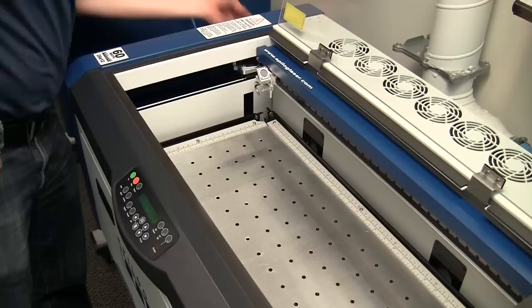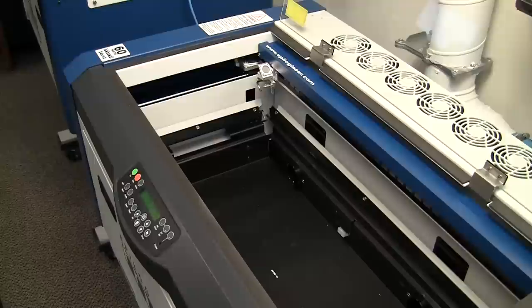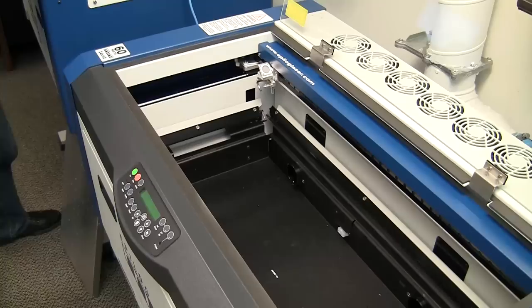We're just going to go ahead and set up the laser for the rotational device. So what I'll do is turn off the machine. We're going to install the rotary, pull out the table.